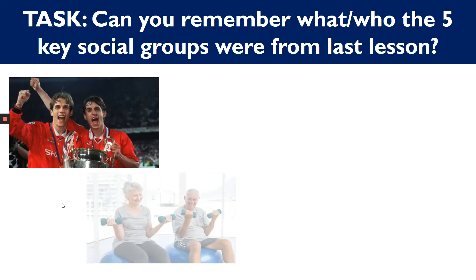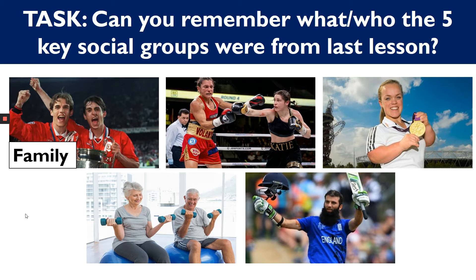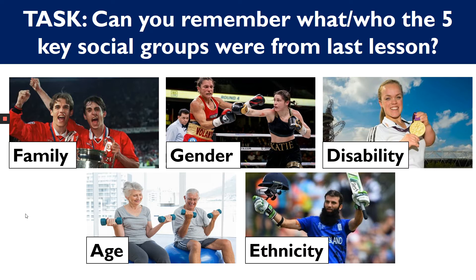If you need a little help, I'll put these images up to act as a prompt. So again, if that helps, just pause the video and write any down that you didn't get first time. A couple of weeks ago we had: family, age, gender, ethnicity, and disability. We looked at how these affect participation — for example, having family members who are physically active themselves will be a positive influence on your participation, because they're more likely to help with transport and cost of equipment, and they'll act as positive role models.